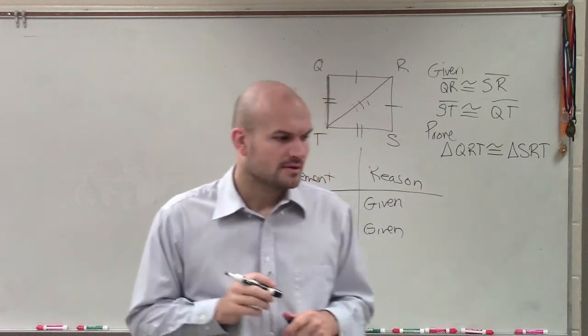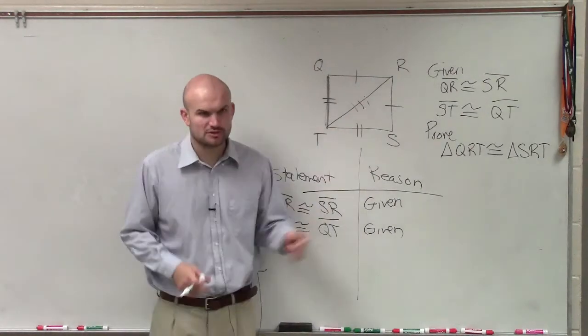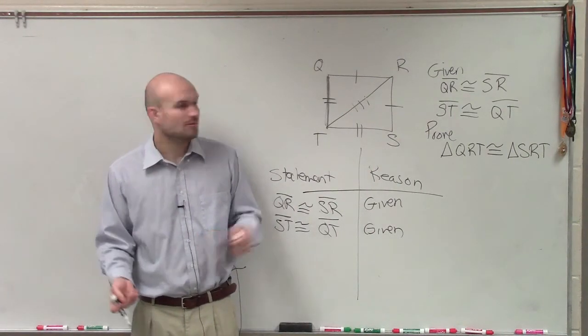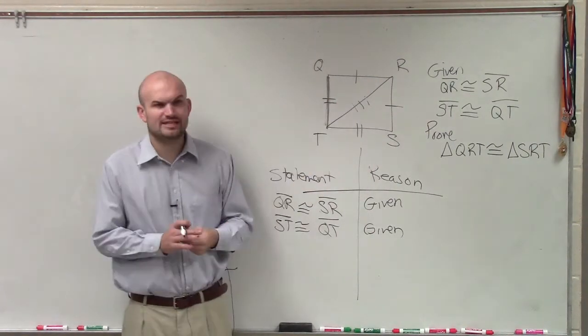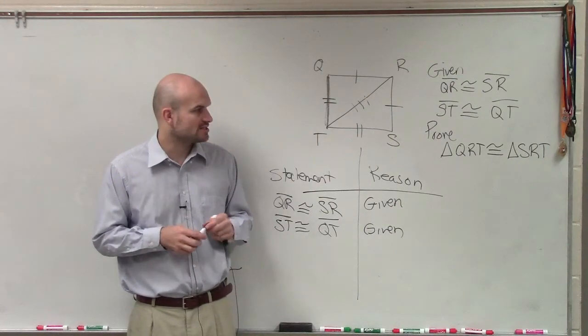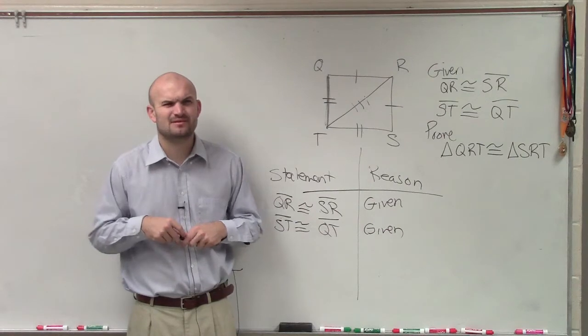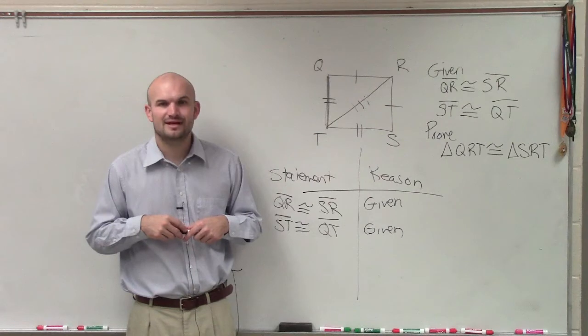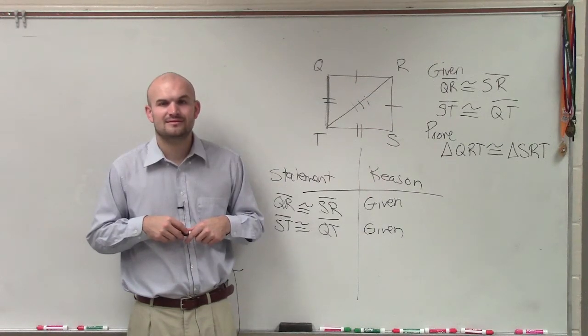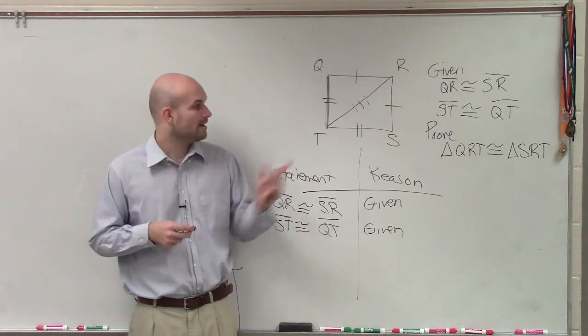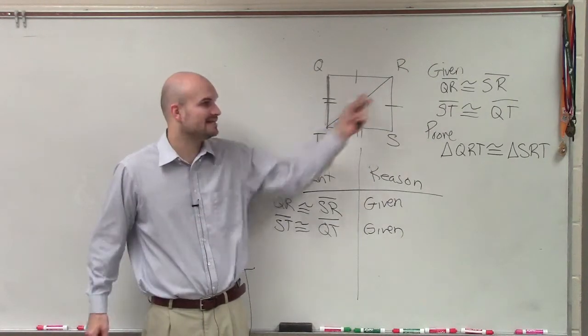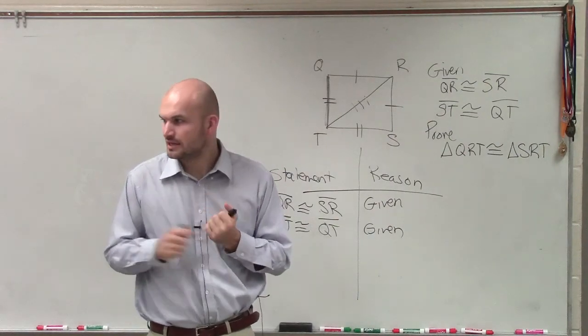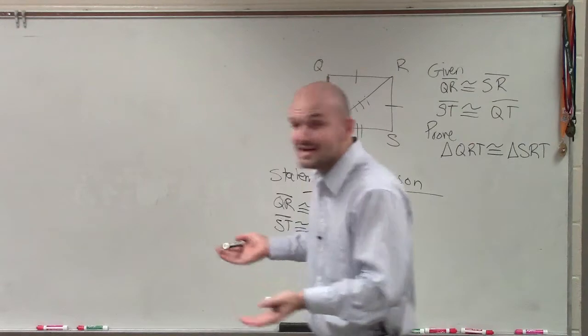The only thing we can try to prove is that this side is equal for both of them. Now, Kale, does that side look like it's the same length for both of those triangles? Why? You're right, but why? Why is the side RT the exact same for both of those triangles, QRT and SRT? Why is it exactly the same? Yes, Kale? It's the exact same for those three. Right.